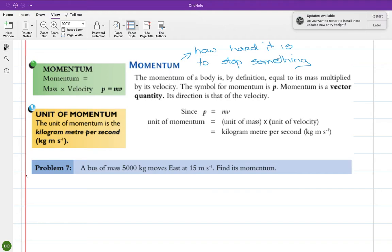Why is the double-decker bus harder to stop than the car even though they're both traveling at the same speed? The reason is because the double-decker bus is bigger. And from a physics sense we say the double-decker bus has a bigger mass.